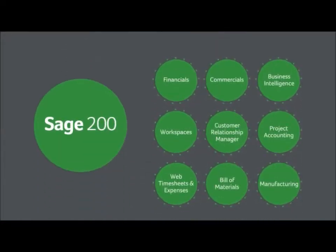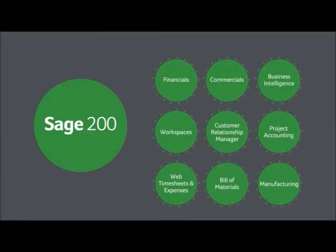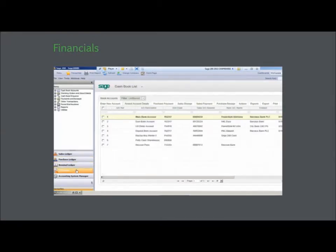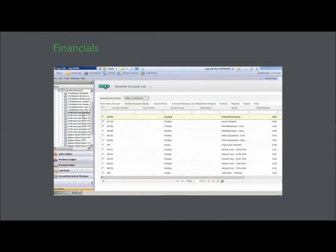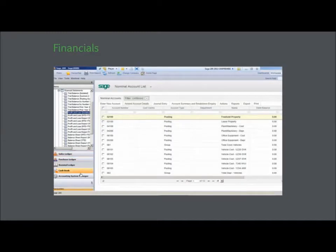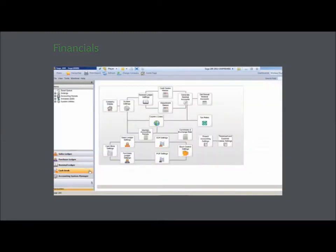Which of Sage 200's nine key elements you choose will depend on the needs of your business. Financials is a core accounting element that runs on four key ledgers: sales, purchase, nominal, and cash book. It provides detailed financial information and standard and customizable reports that enable quick, up-to-the-minute analysis and decision-making.